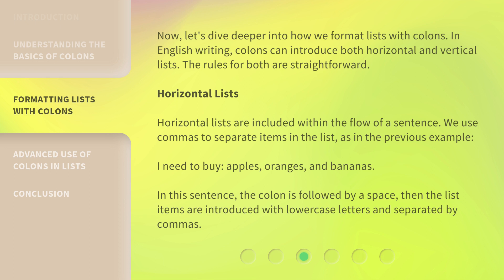Horizontal lists are included within the flow of a sentence. We use commas to separate items in the list, as in the previous example: I need to buy apples, oranges, and bananas. The colon is followed by a space, then the list items are introduced with lowercase letters and separated by commas.